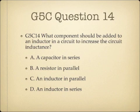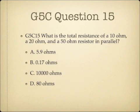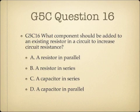Question 13: What component should be added to a capacitor in a circuit to increase the circuit capacitance? A. An inductor in series. B. A resistor in series. C. A capacitor in parallel. Or D. A capacitor in series. Question 14: What component should be added to an inductor in a circuit to increase the circuit inductance? A. A capacitor in series. B. A resistor in parallel. C. An inductor in parallel. Or D. An inductor in series. Question 15: What is the total resistance of a 10-ohm, a 20-ohm, and a 50-ohm resistor in parallel? A. 5.9 ohms. B. 0.17 ohms. C. 10,000 ohms. Or D. 80 ohms. Question 16: What component should be added to an existing resistor in a circuit to increase circuit resistance? A. A resistor in parallel. B. A resistor in series. C. A capacitor in series. Or D. A capacitor in parallel.